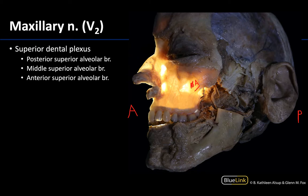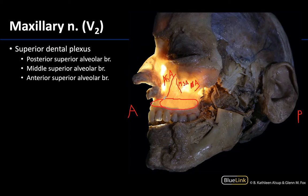The posterior superior alveolar branch is a direct branch of V2. Both the middle and anterior superior alveolar branches are typically branches of the infraorbital nerve, and sometimes the middle branches are missing. Those closer to the premolars are the MSA, or middle superior alveolar, branches. Those heading more towards the incisors and canine will be the ASA, or anterior superior alveolar, branch. This entire region is the superior dental plexus — smaller branches directly associated with the teeth for afferent innervation.